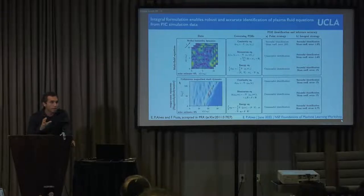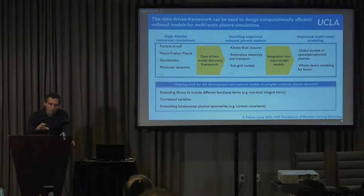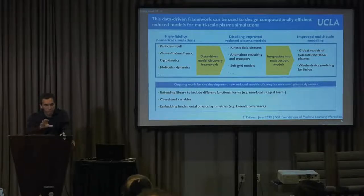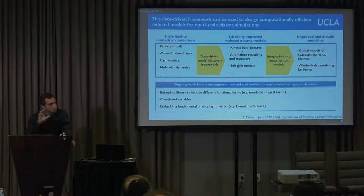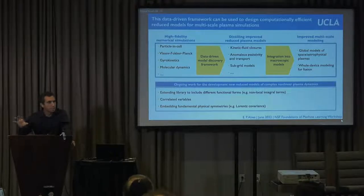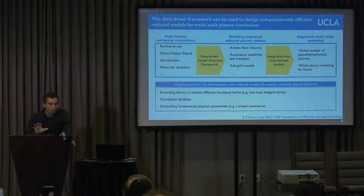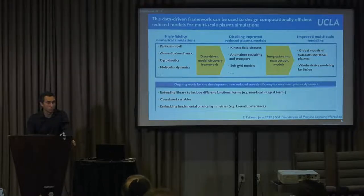A critical part when developing these reduced models is the so-called closure problem, and tackling it is an extremely exciting application of machine learning. The vision is that in the concrete case of plasma physics — and I'm confident this is the same in many other fields — there are abundant high fidelity numerical simulations for different problems. I'm convinced that data-driven discovery frameworks can help us distill important reduced descriptions and incorporate them into more macroscopic models, keeping this closely connected with theory and improving our ability to do multiscale modeling. Thank you for your attention; I would love to take questions.